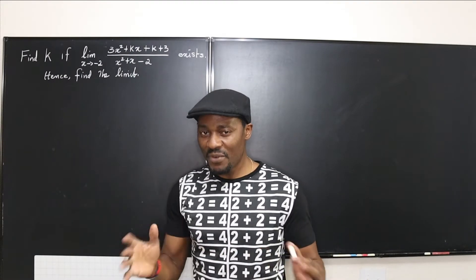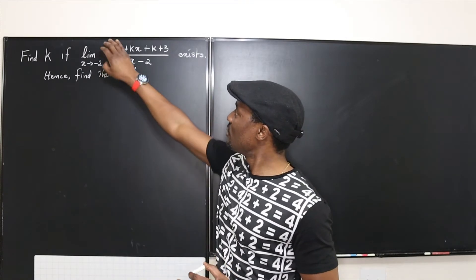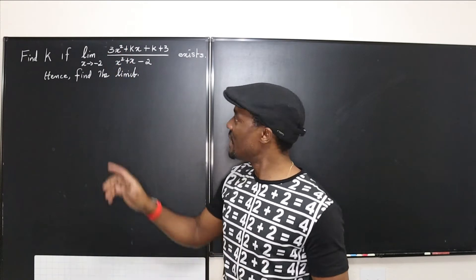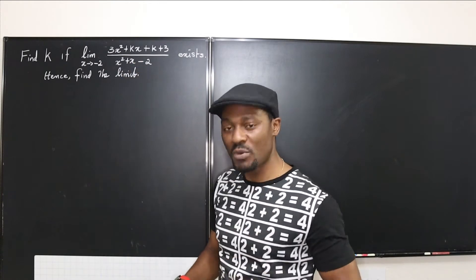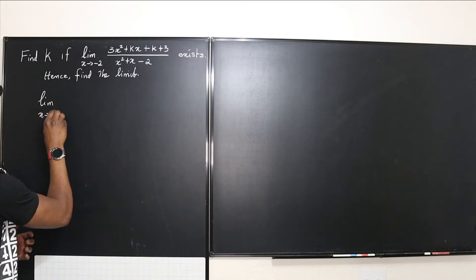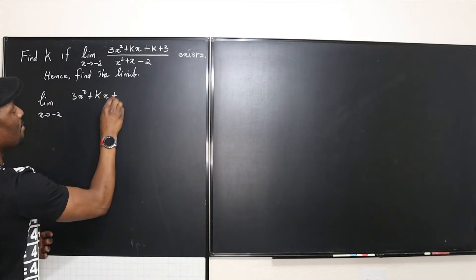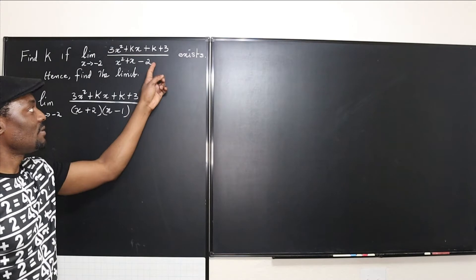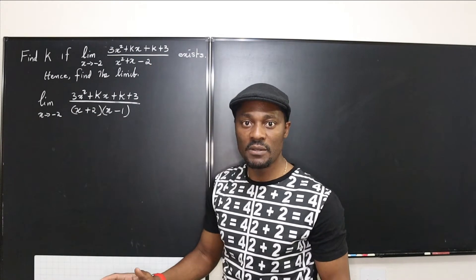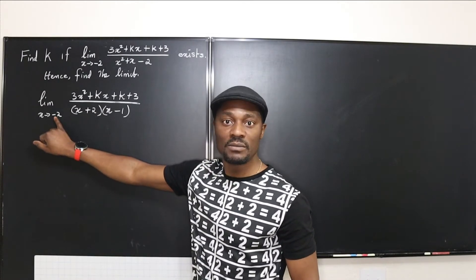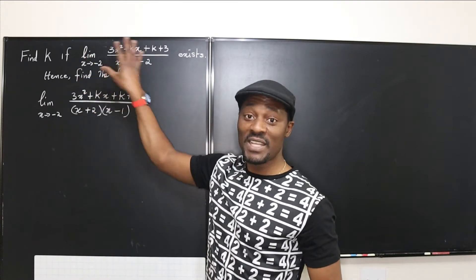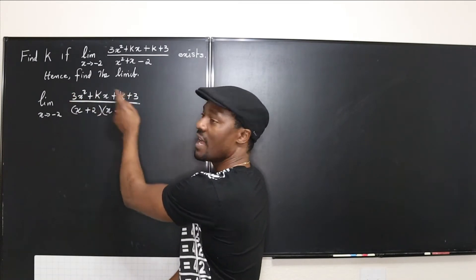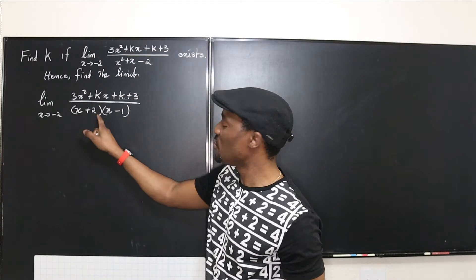So how do we go about this? We assume the rational expression is defined — that we won't be dividing by 0 by the time we're done. First, factor the denominator and rewrite the limit. The limit as x goes to -2 of (3x² + kx + k + 3) over (x + 2)(x - 1). Now, which factor causes the problem? It's (x + 2), since substituting -2 gives 0. So the only way this limit exists is if (x + 2) is also a factor of the numerator.